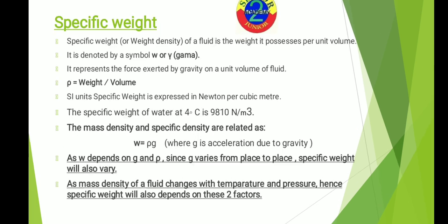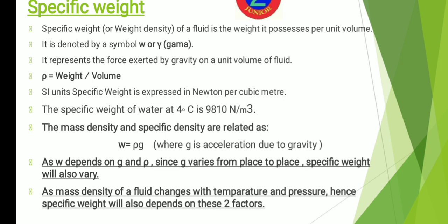Let us see the next term, that is specific weight, which is very important. Specific weight is also called weight density and it is the weight possessed by the fluid per unit volume. It is denoted by gamma and the SI unit is Newton per meter cube. The specific weight of water at 4 degree Celsius is 9810 Newton per meter cube, or 9.8 kilo Newton per meter cube. Mass density and specific weight are related as W equals rho times g — mass density multiplied by acceleration due to gravity.